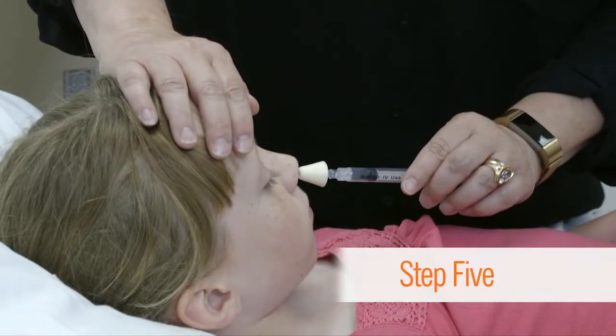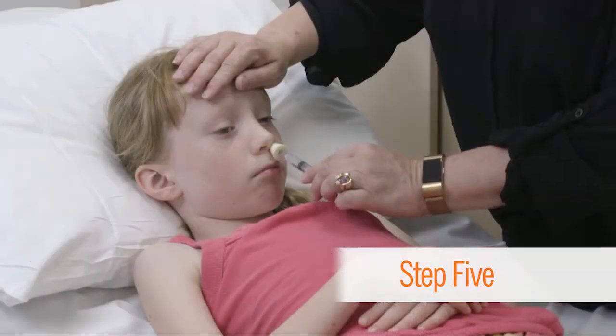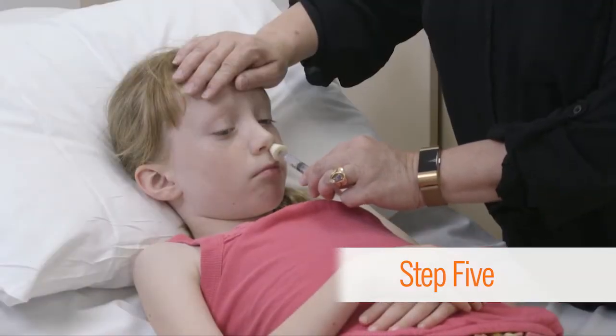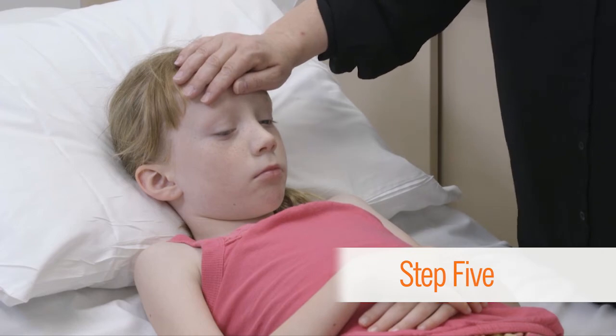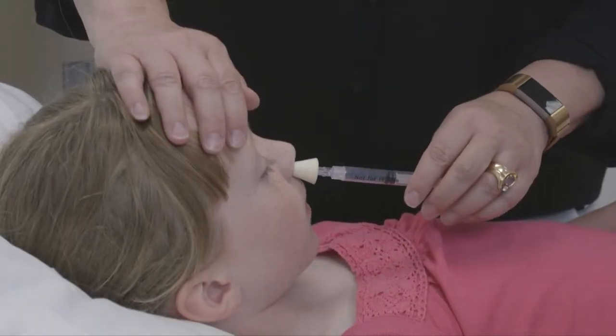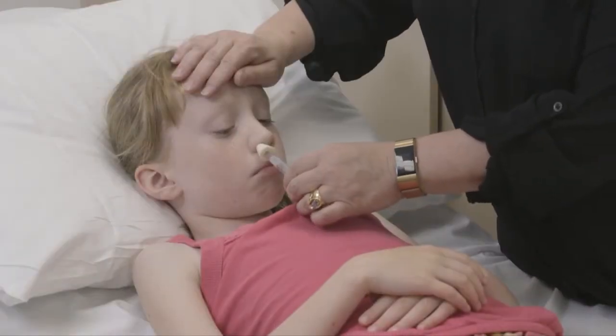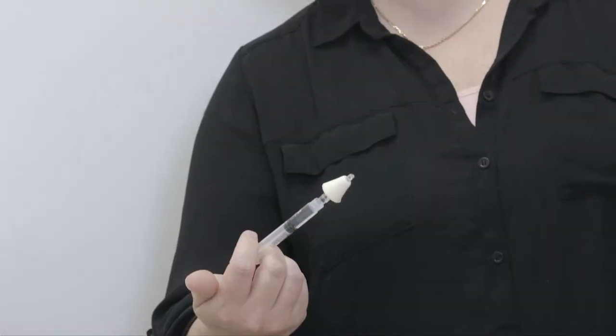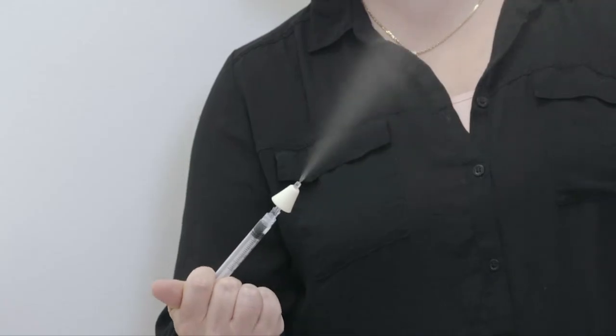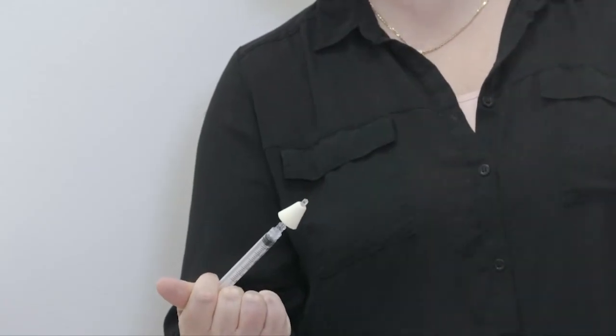Insert the atomizer into the nostril and deliver half of the medication through one side. Then insert the atomizer into the other side and deliver the rest of the medication. When the medication is administered in the nose, it will come out as a spray or mist.